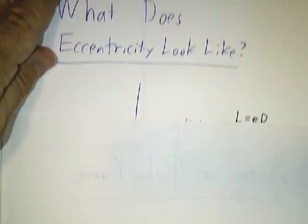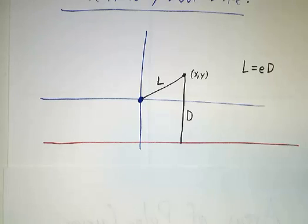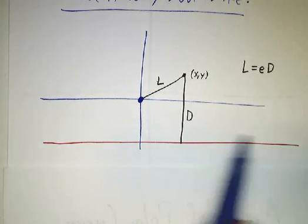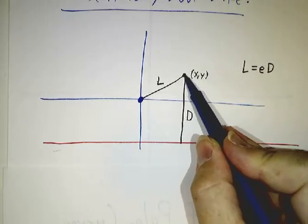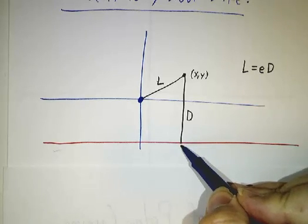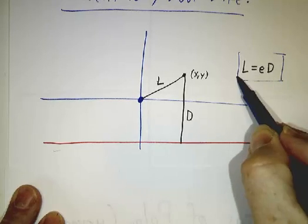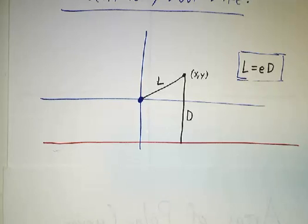The one equation we're going to look at is the definition of eccentricity. We'll work with a conic section where the focus is at the origin and we'll put the directrix below the origin, making it horizontal. L is the distance from a point to the focus, D is the distance to the directrix, and our equation is L = e·D. We're going to look at this for different values of e and see what kind of curve it gives us.